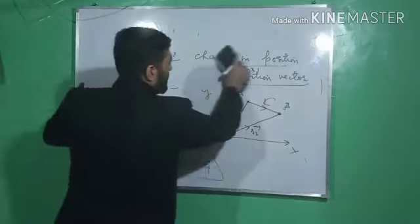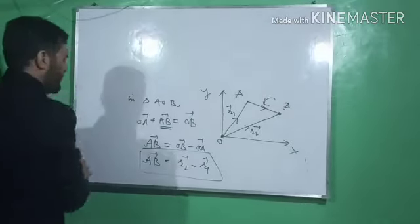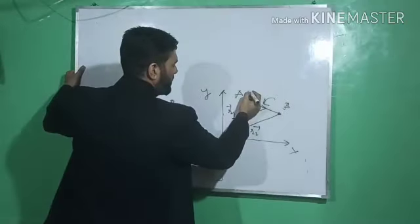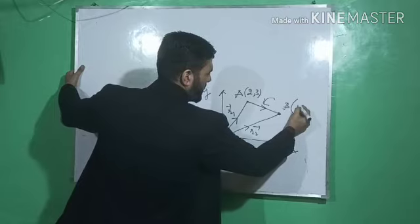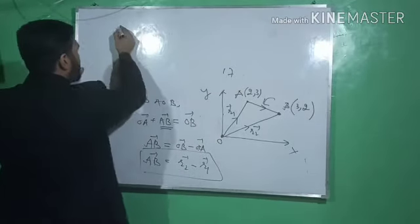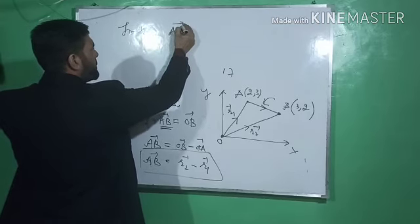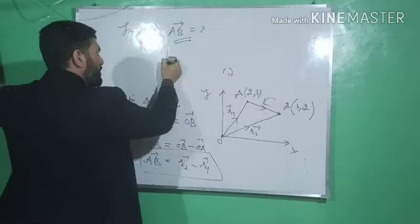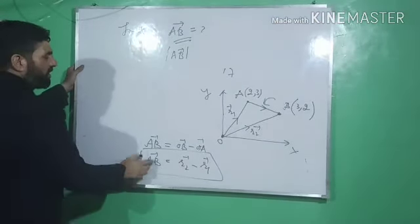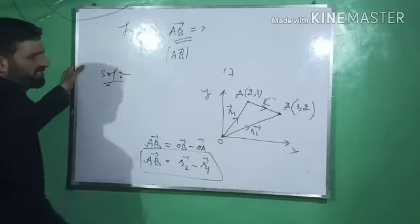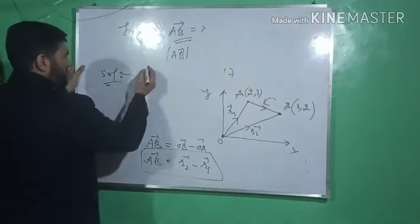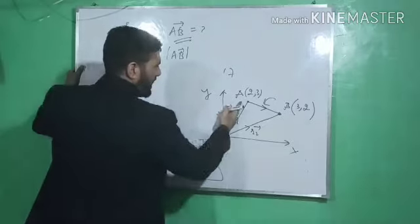To illustrate this, let's take a simple numerical example. Suppose point A has coordinates (2, 3) and point B has coordinates (3, 2). Find the displacement vector AB — its magnitude and direction.